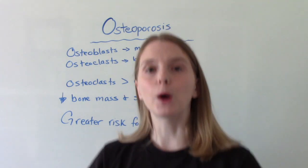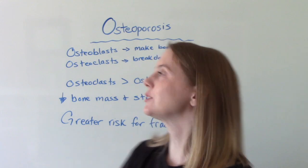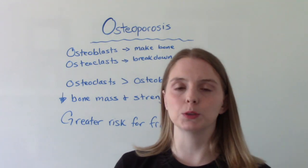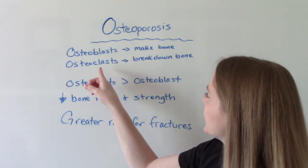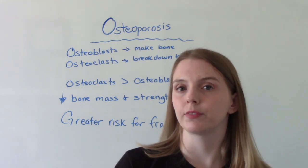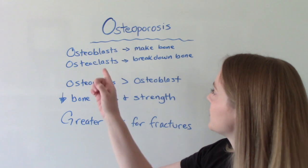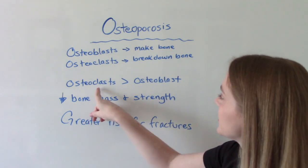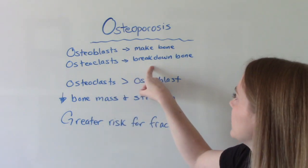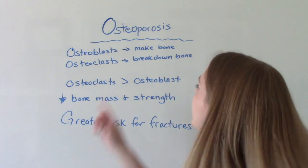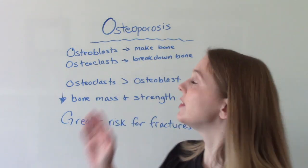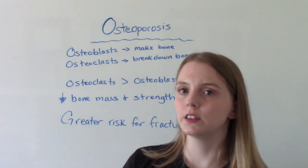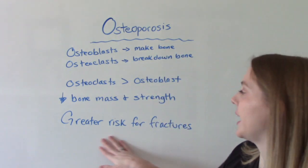Bones are a natural living thing — they're always remodeling themselves. We have our osteoblasts, which are responsible for making the bone, and our osteoclasts, which are responsible for breaking down the bone. In people who don't have osteoporosis, these two things occur at an even pace. When you get osteoporosis, the osteoclasts are working much quicker than the ones that make new bone, which makes our bones weak, decreases the overall mass and strength of our bones, and makes us more susceptible to fractures.